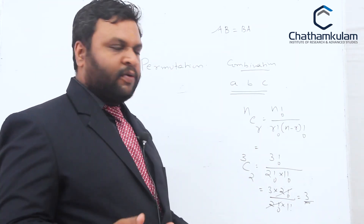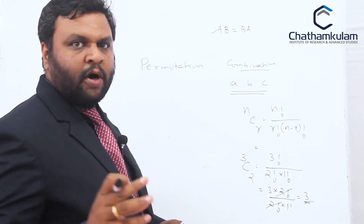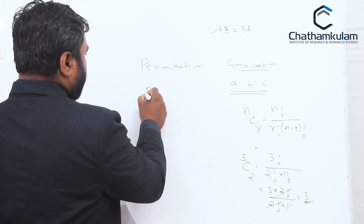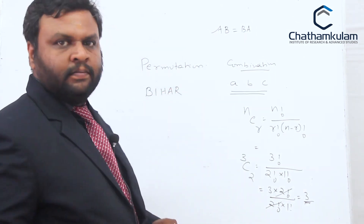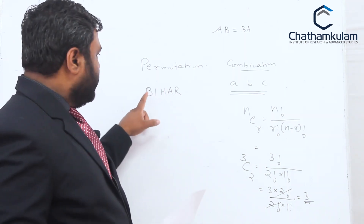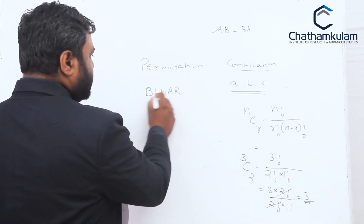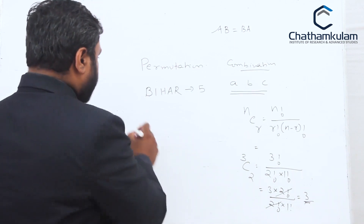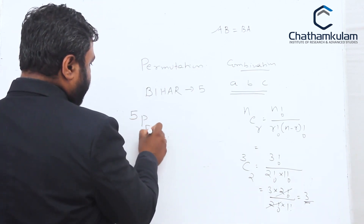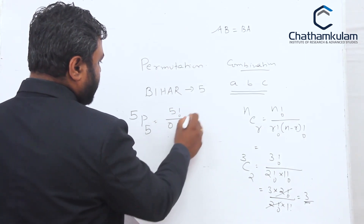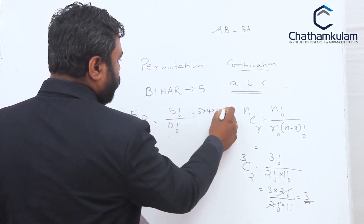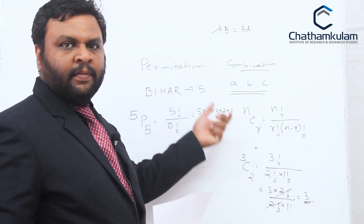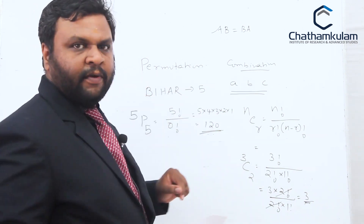Let us see one example: in how many ways can words be formed from the word BIHA? The word BIHA has five letters. So we need to calculate 5P5 = 5! / 0! = 5×4×3×2×1 = 120. Therefore, 120 arrangements or 120 words can be derived from the word BIHA.